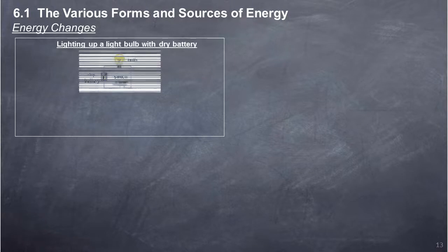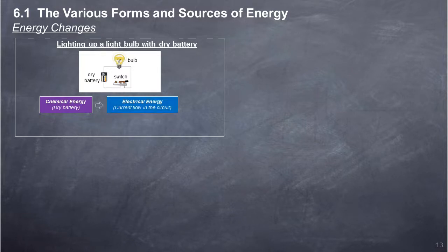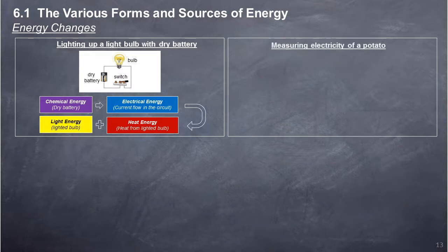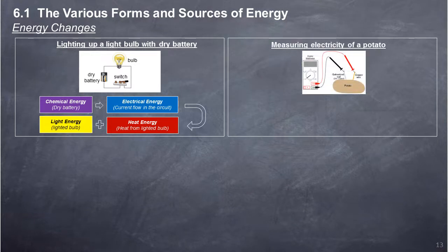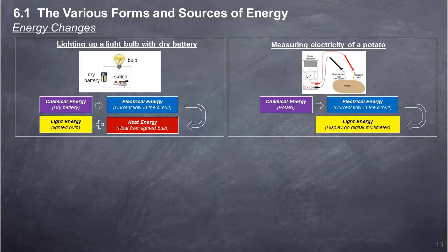Lighting up a light bulb with a dry battery: The energy changes are — chemical energy of the dry battery changes to electrical energy of current flow in the circuit, which changes to heat energy from the lighted bulb plus light energy of the lighted bulb. Measuring electricity of a potato: Chemical energy of the potato changes to electrical energy of current flow in the circuit, which changes to light energy of the display on a digital multimeter.